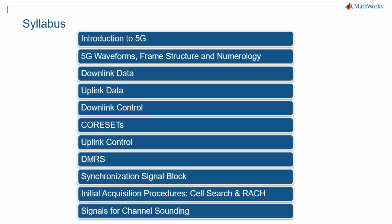Beamforming is a critical part of 5G NR and it requires demodulation reference symbols, or DMRS, to accompany each and every piece of information transmitted both on the downlink and the uplink. DMRS are much more flexible in 5G NR than they are in LTE.